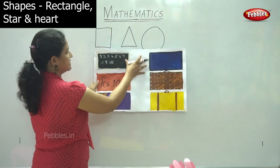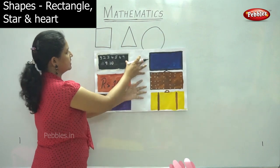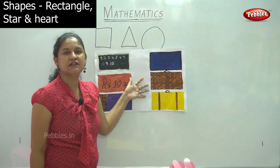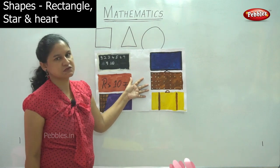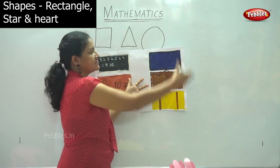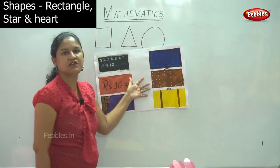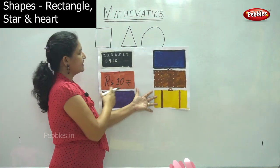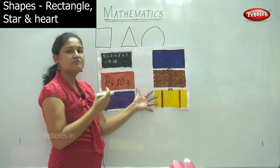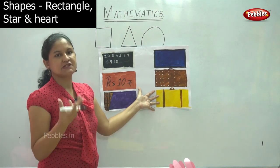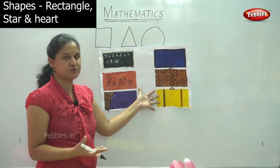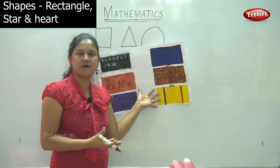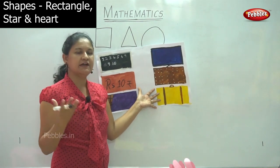This is nothing but the blackboard — the blackboard or whiteboard that we use in school. The next example of a rectangle is your money — your note. The 10 rupee note, 100 rupee note, 500 rupee note. These are all examples of a rectangle.